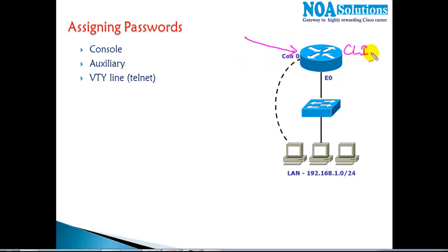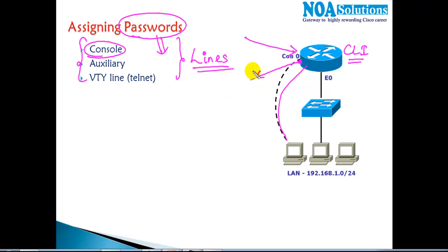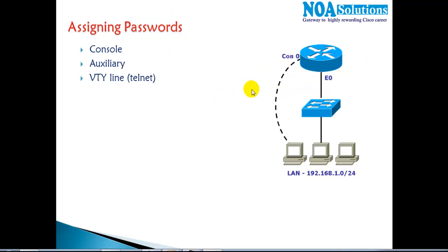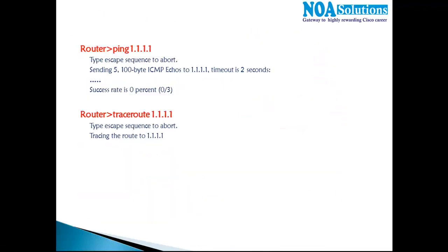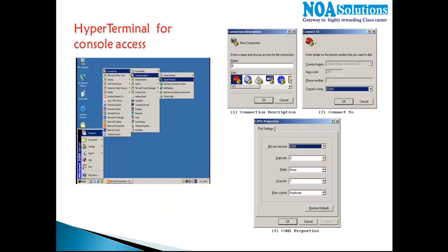I want to secure this device so that if anyone tries to access the command line of this router, it should prompt for a password. To assign passwords, we first need to know the different lines — or different doors — through which we can access the device. There are three main lines: the console line, the auxiliary line, and the VTY line. Via the console, I connect a console cable to the router and access it through a console line.